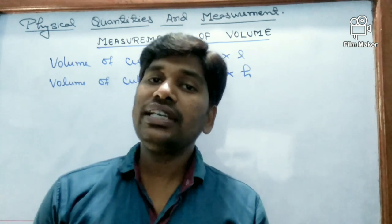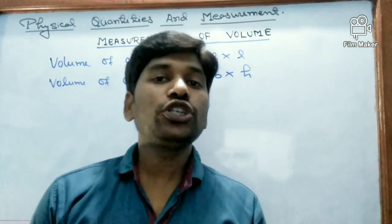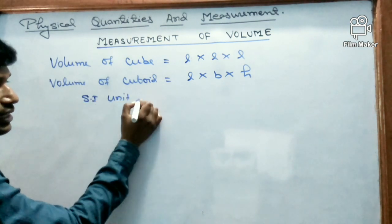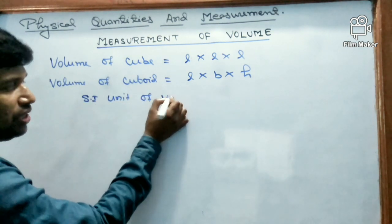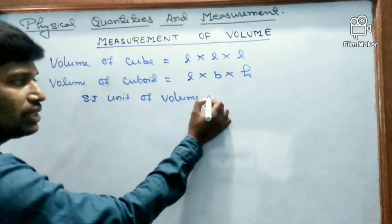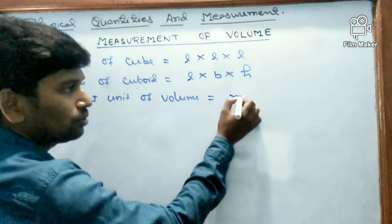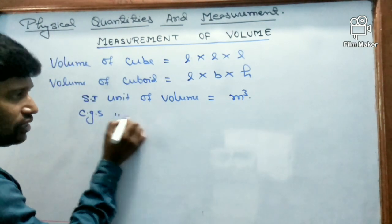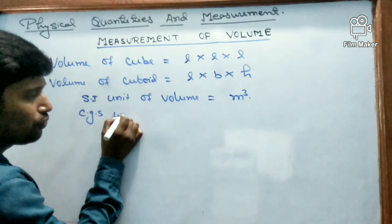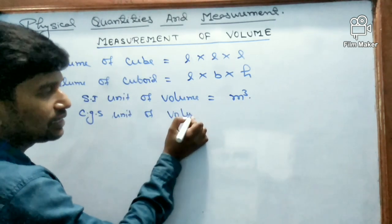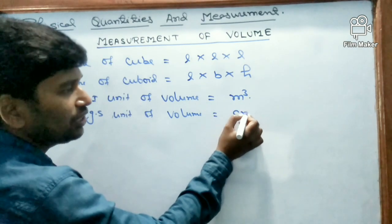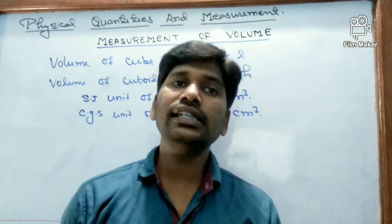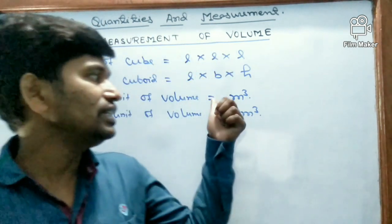Volume can be measured in meter cube. The SI unit of volume is meter cube. The SI unit of capacity is also meter cube. The CGS unit of volume is centimeter cube.